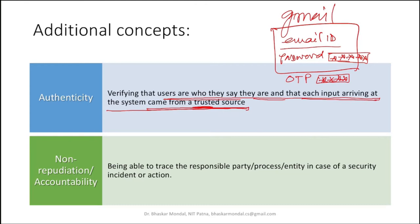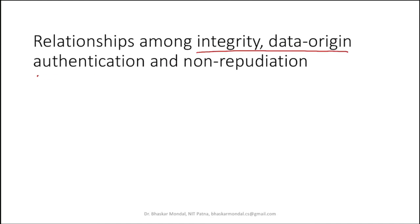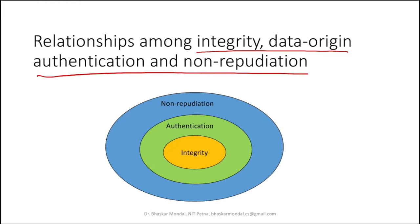Non-repudiation or accountability means being able to trace the responsible party, process, or entity in case of a security incident or any action. There is a relationship among integrity, data origin authentication, and non-repudiation — integrity is at the core. If integrity is maintained, some non-repudiation problems are also assured. Even authentication things are covered by integrity — like message authentication code, MAC. This message authentication can be done through integrity.